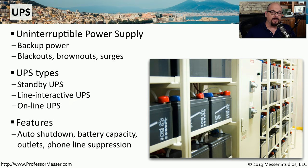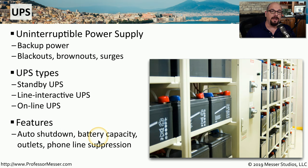Besides environmental control, you also have other features available on a UPS. For example, the UPS could tell your computer that there's no longer any main power and it should go through its normal shutdown process. You also have options for other types of battery capacities and outlets on the back of the UPS, and you might also have the option to plug in a phone line or a network connection to suppress any voltages going over those connections.